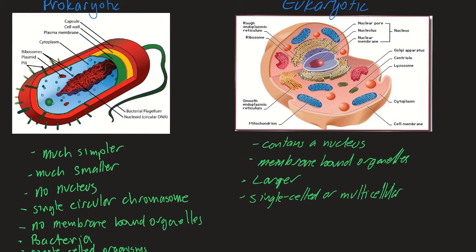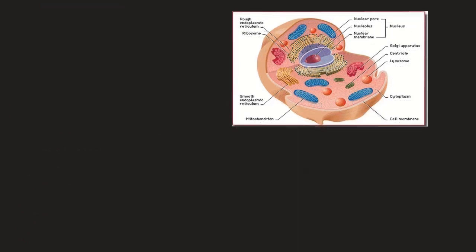Eukaryotic cells can either be single-celled or multicellular organisms. Now let's look at the organelles within the eukaryotic cell. This diagram shows an animal cell. Animals and plant cells have many of the same organelles, but there are some differences. We'll cover the key organelles in both and then look at how the plant cell differs.